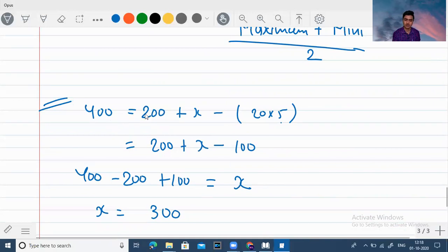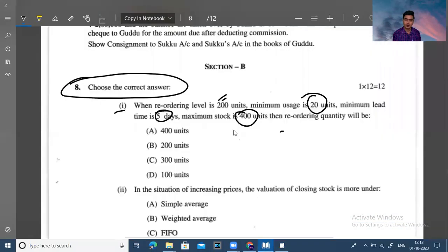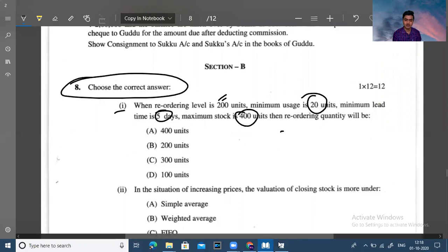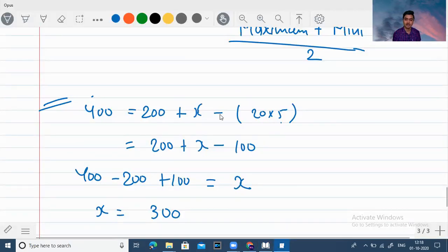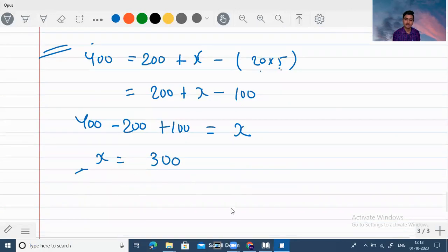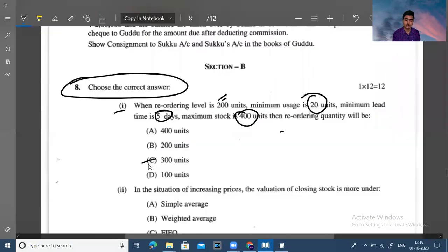Now you can see, I have calculated this formula. This was the maximum level. This was the 200 quantity. This was the reorder level. And plus we have reorder quantity minus minimum rate into minimum lead time and this equation is solved. So we have reorder quantity. How much is it? 300.